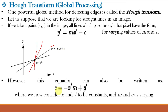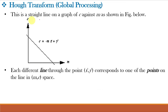We rewrite the equation as C = −X-dash·M + Y-dash, making C the subject. Now we consider X-dash and Y-dash to be constants and M and C as varying. This is the equation of a straight line, so the point (X-dash, Y-dash) becomes a straight line in the parameter space or Hough space — a straight line on the graph of C against M. Each different line through the point X-dash, Y-dash corresponds to one point on that line in MC space. Let us understand this with an example.